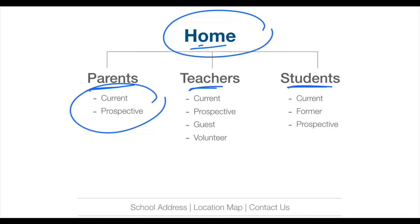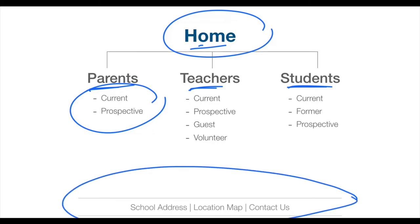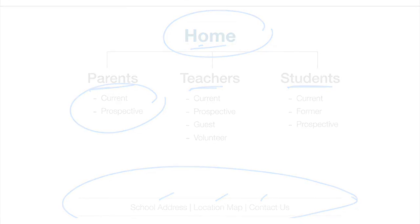Finally, we said our website will have a footer — information useful for all target audience categories — such as the school address, location map, and phone and email, so that audiences can get in touch with us. Having defined the site map, let's now turn to creating a storyboard. A storyboard is a rough visual design of our website — just a sketch of how we think the website will look.